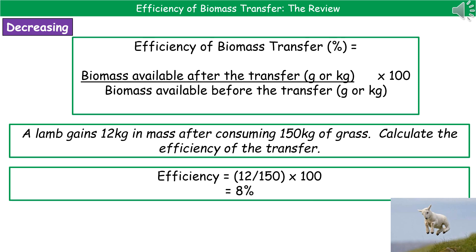An example question: a lamb gains 12 kilograms in mass after consuming 150 kilograms of grass. Calculate the efficiency of the transfer. Biomass after divided by biomass before: 12 divided by 150, multiplied by 100, gives us 8% efficiency.